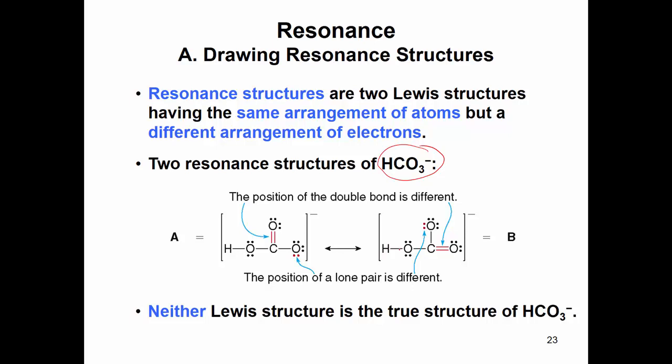And so when I'm doing this, neither of these are wrong. These are what we call resonant structures, and we draw resonant structures, we put a double-headed arrow between them. So if you ever see that in your chemistry books, or whatever you're reading, that means resonant structure.